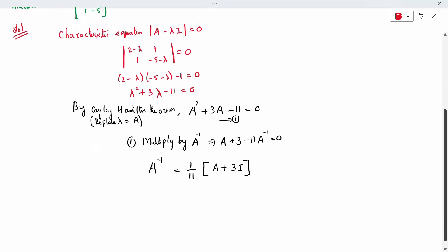Now A is in the question. 3I, I is nothing but unit element. So when you add this, I will get A inverse directly. So that only I am going to do the calculation. 1 by 11, A is the given question. So what is the given question? 2, 1, 1 minus 5 plus 3 into unit element. So 1, 0, 0, 1. So add this both. 5, 1, 1 minus 2. So A inverse is this, the answer.